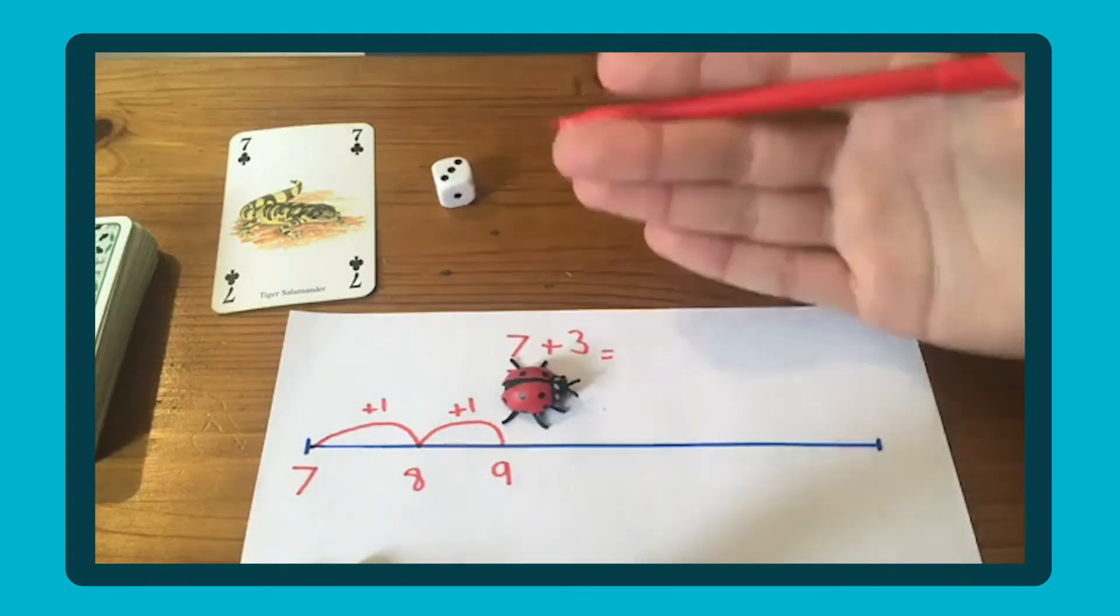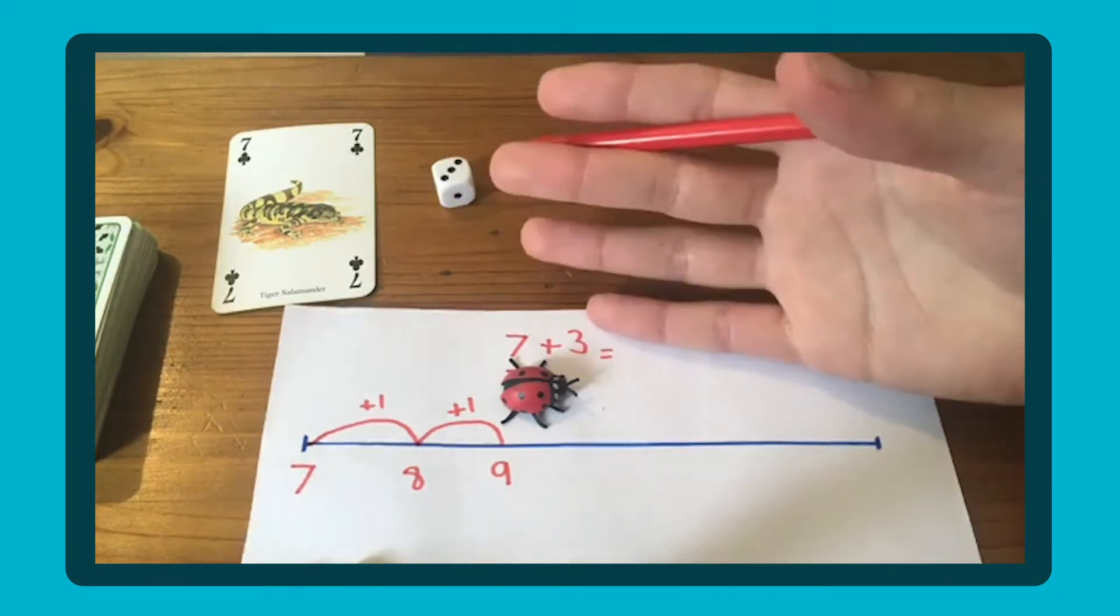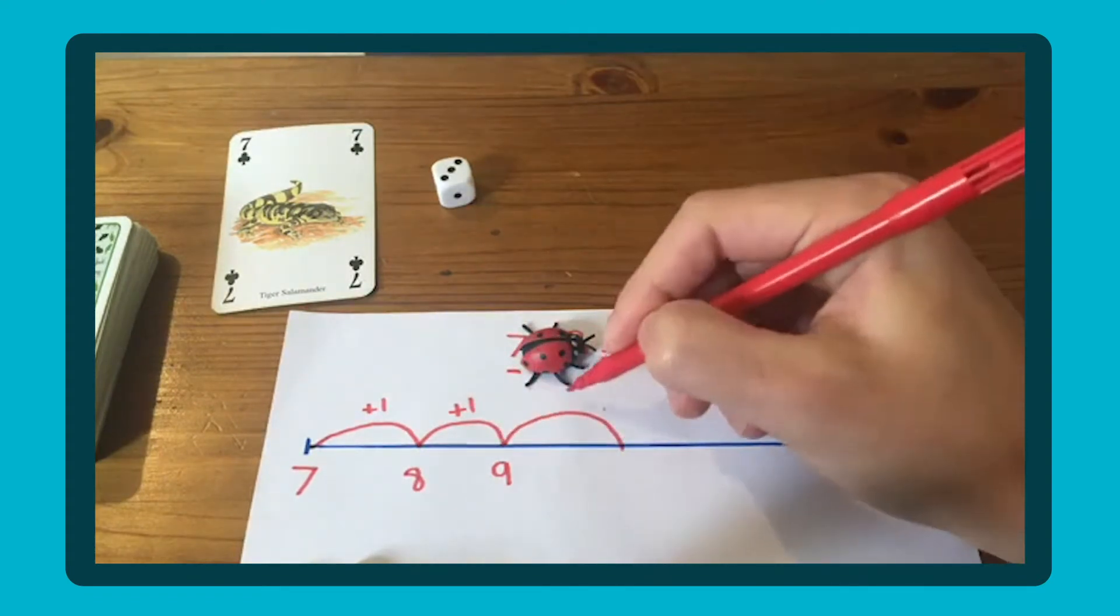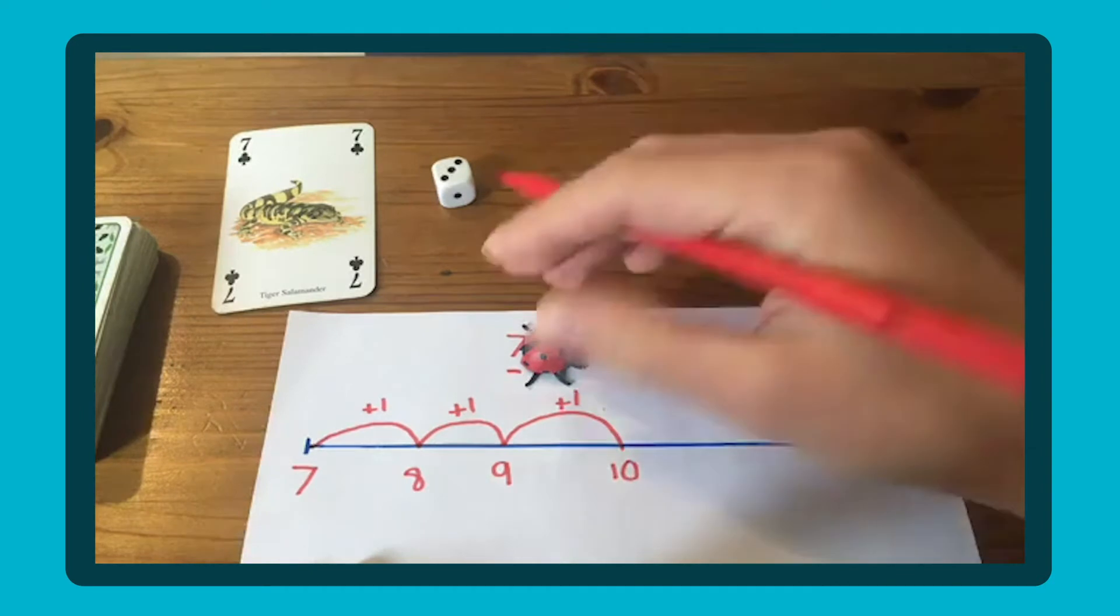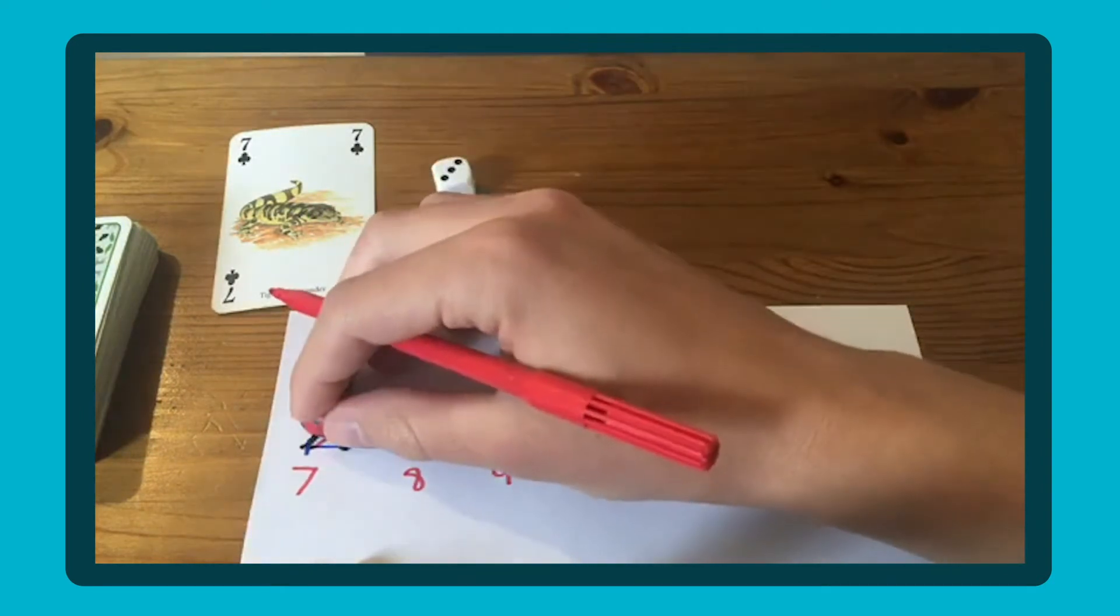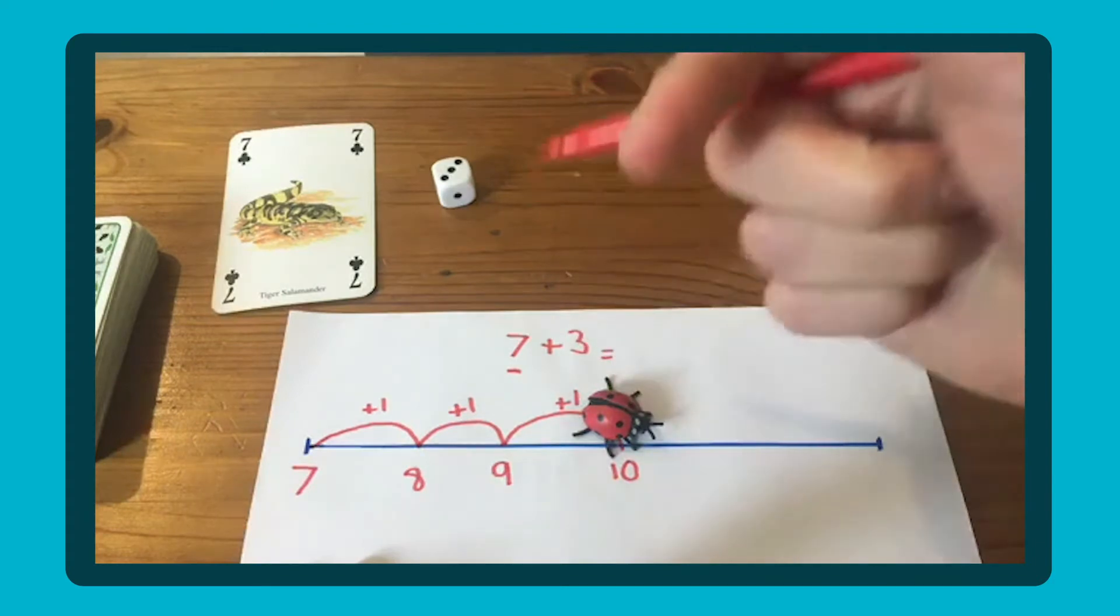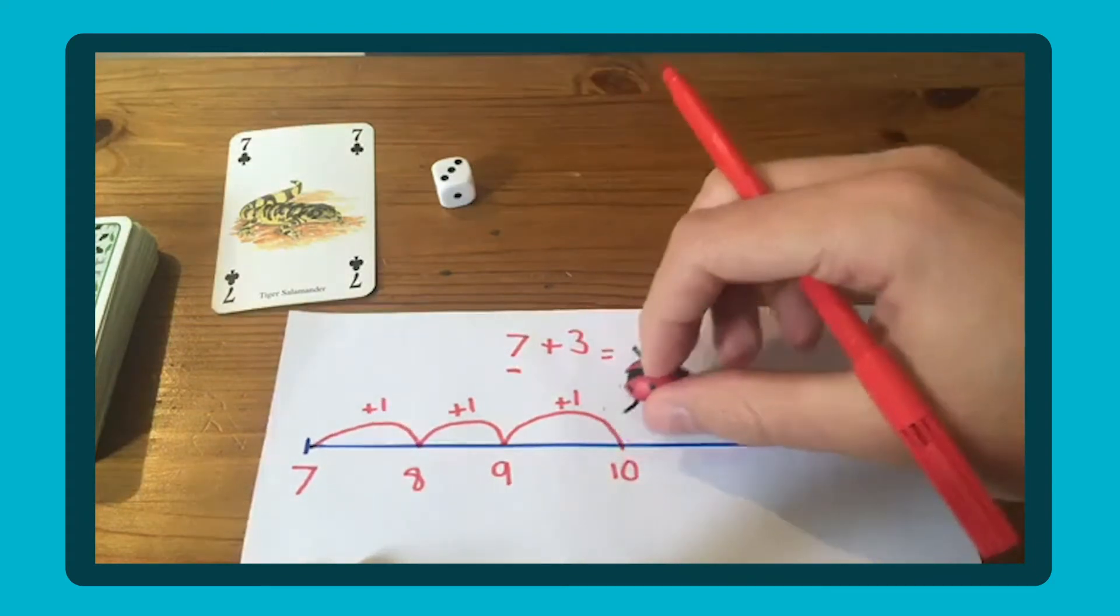You could ask your child, how many more do I need to add? One more because I'm adding three. Questioning throughout is really useful to keep your child thinking. We've done our three jumps: seven add one, two, three gets me to 10, and you can work up with that sequence of numbers as well.